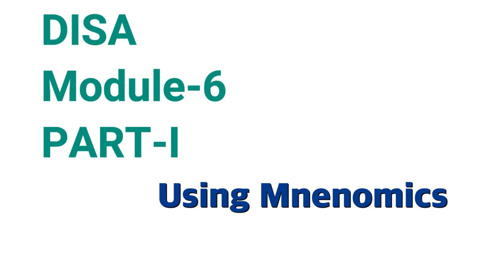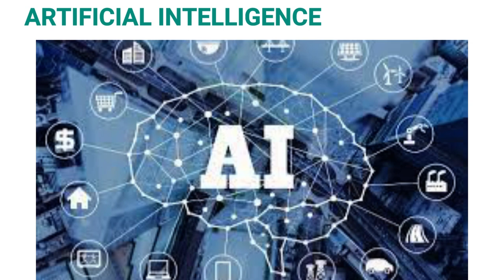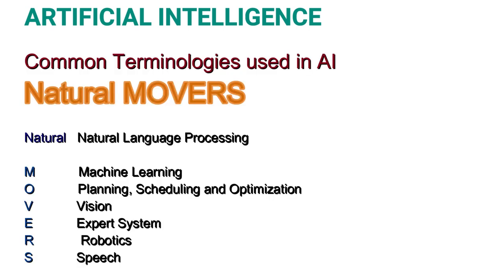Topic number one is Artificial Intelligence. The common technologies used in Artificial Intelligence and the mnemonic for the same is 'NATURAL MOVERS'. N stands for Natural Language Processing, A for machine learning, T stands for planning, scheduling and optimization, U for vision, R stands for expert systems, A for robotics, and L for speech.